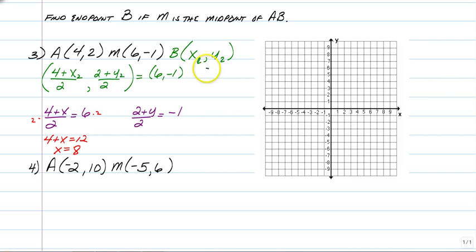So B is going to be 8, comma, now you need to go solve your equation for y. So again, you need to get rid of the 2 in your denominator. So multiply both sides by 2. And you'll have 2 plus y is equal to negative 2. Subtract 2 from both sides and you're going to end up with y equals negative 4.